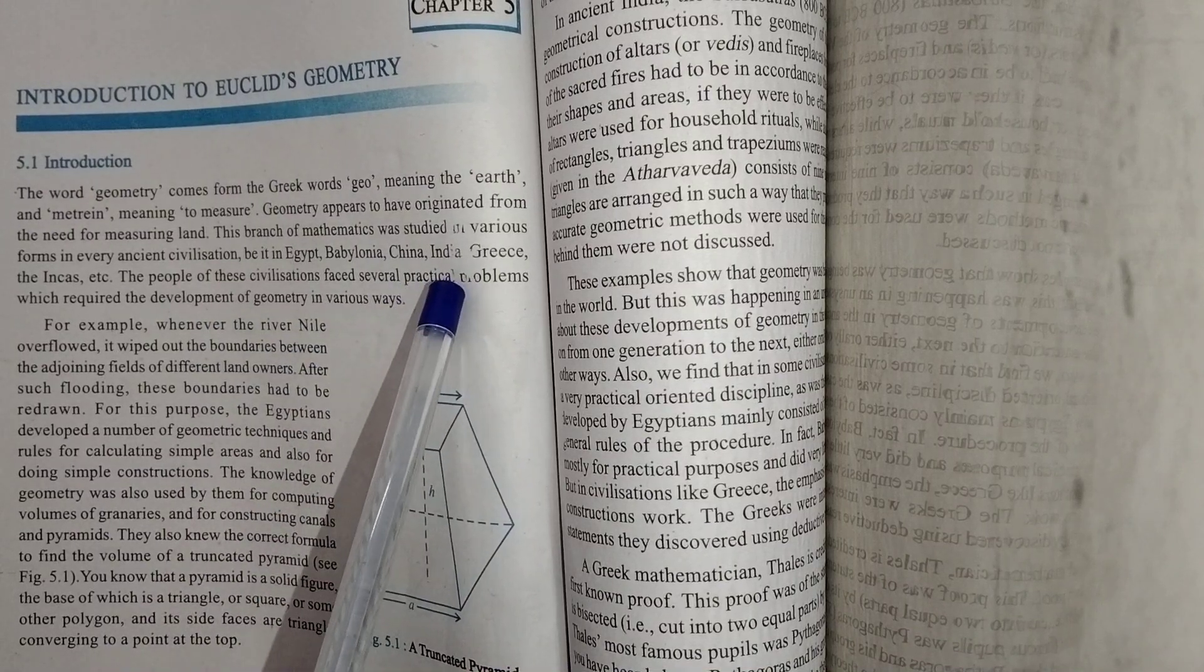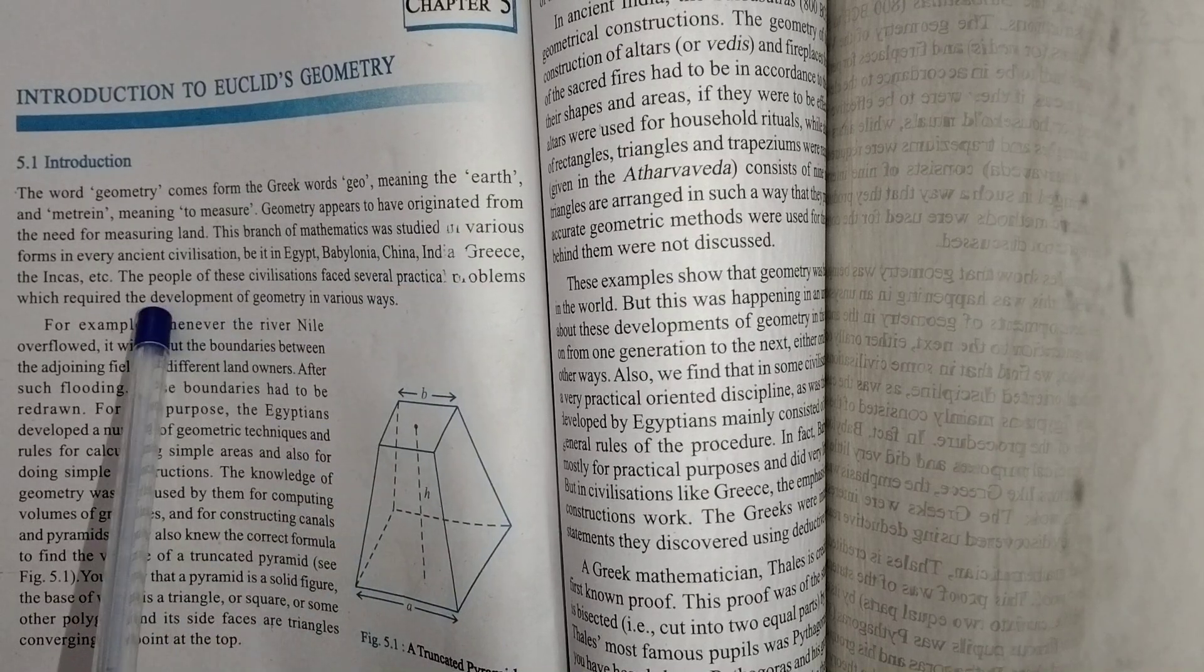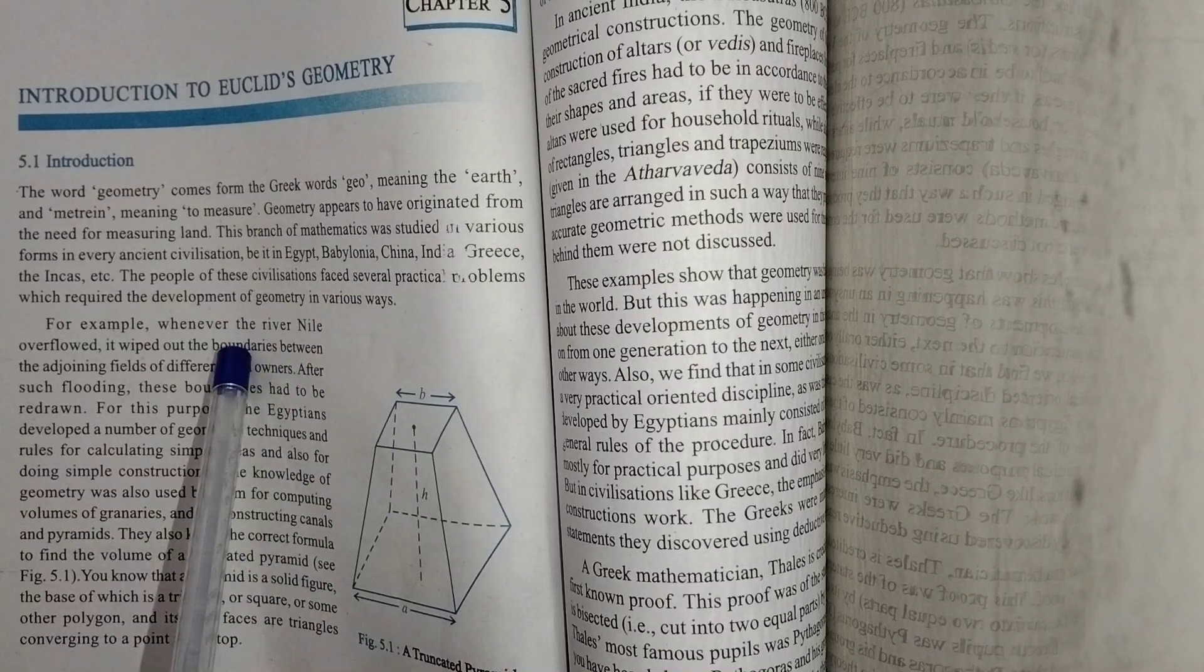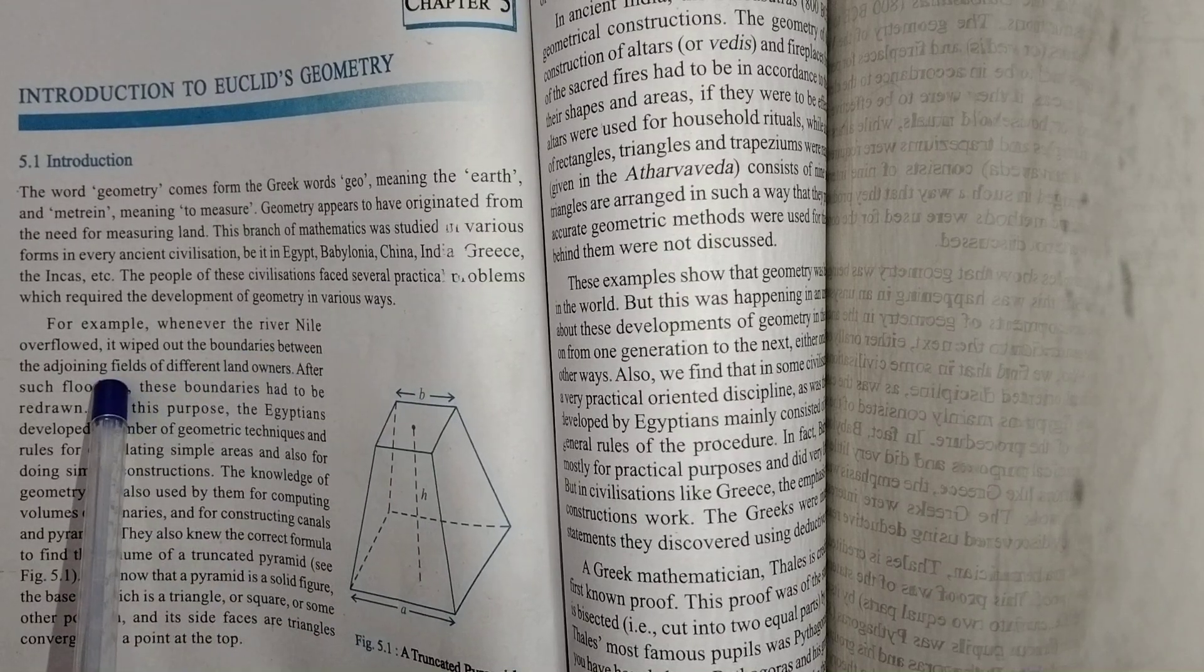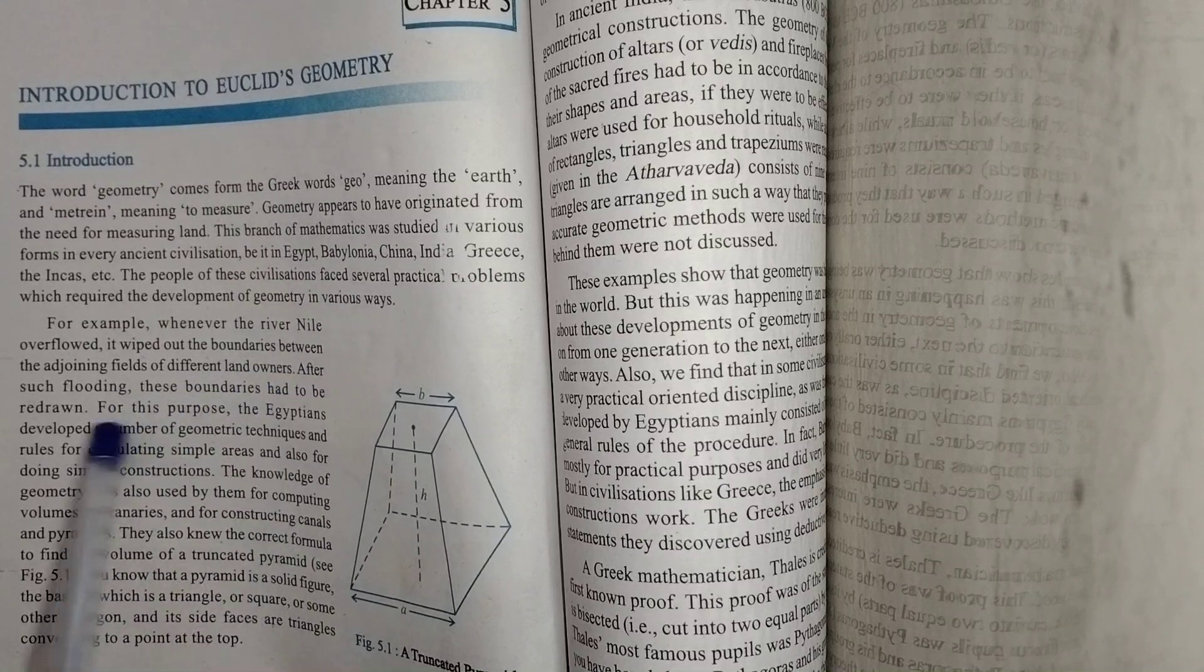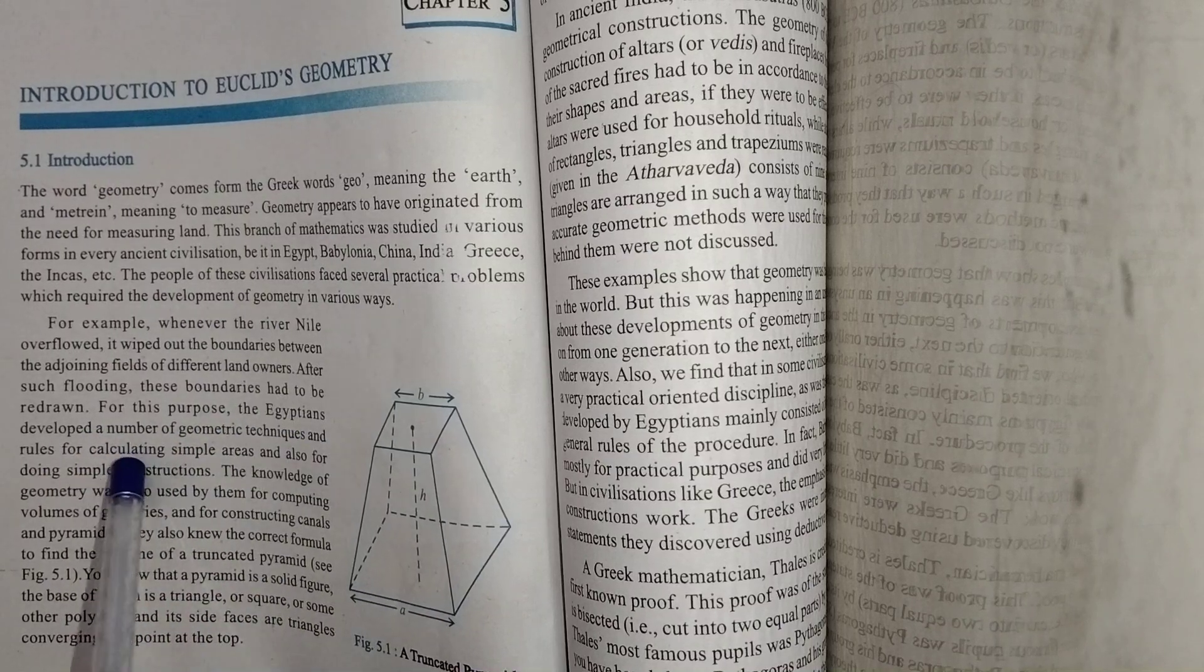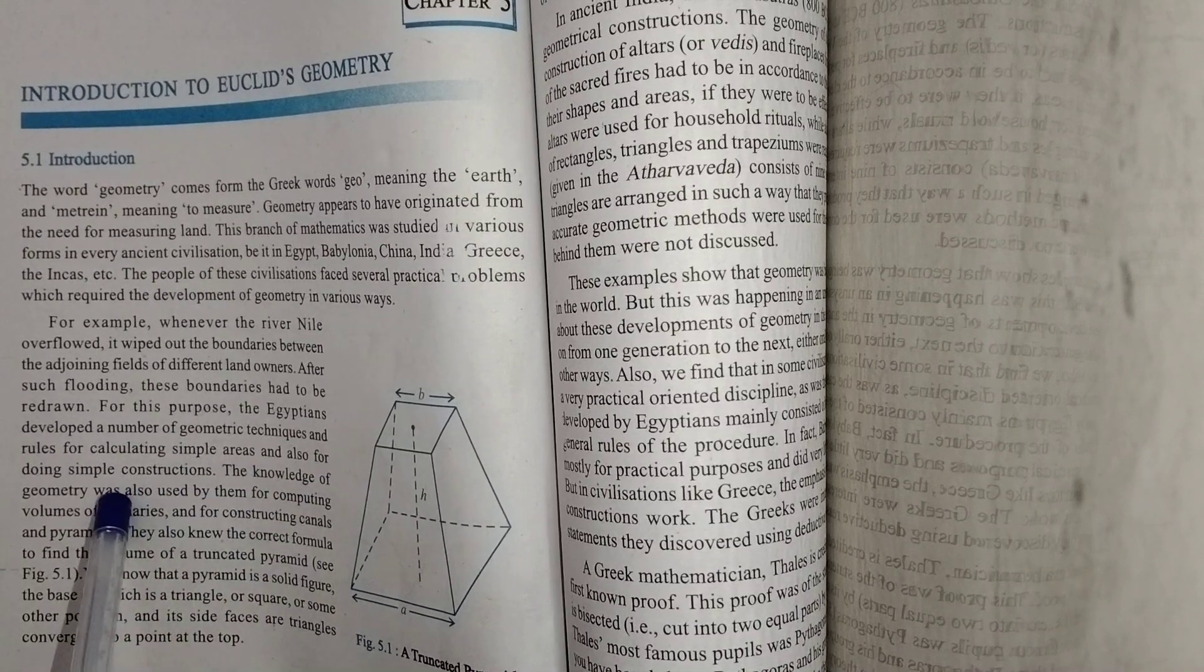Countries like Egypt, Babylonia, China, India, and Greece had faced many problems from ancient times. For example, whenever the river Nile overflowed, it wiped out boundaries between adjoining fields of different landowners. After such flooding, these boundaries had to be redrawn. For this purpose, the Egyptians...